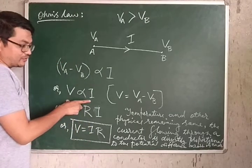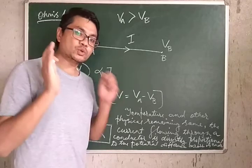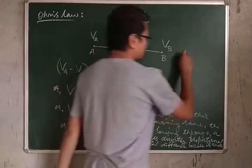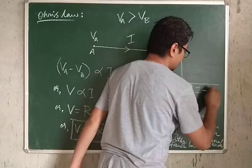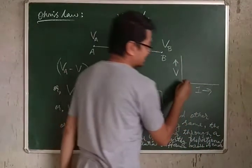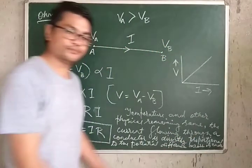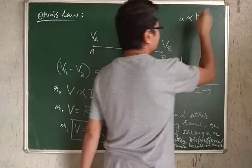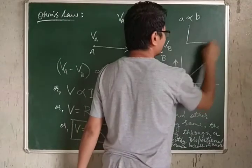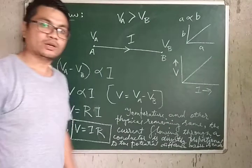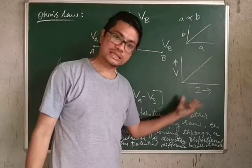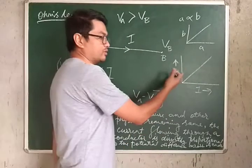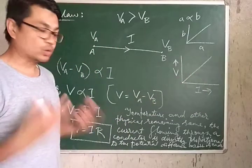Since V is directly proportional to I, if we plot a graph of I versus V, we get a straight line passing through the origin. This is the graph for Ohm's law. Any two quantities where A is directly proportional to B will always give a straight line graph through the origin.